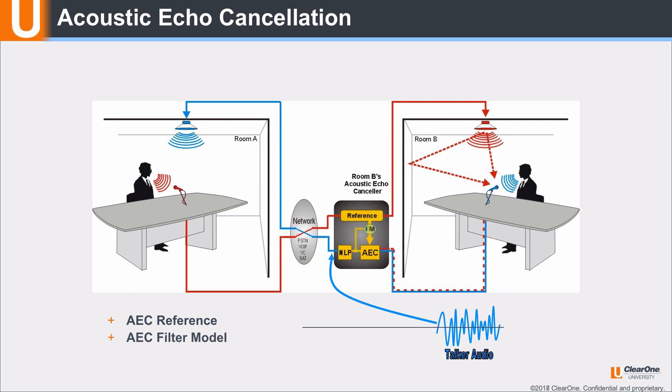To resolve this, the AEC has an internal filter model that detects residual echo and uses it to adjust the AEC reference signal until it matches the acoustic echo coming from the room. This is an ongoing process called convergence.